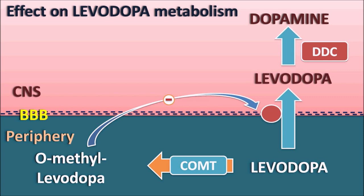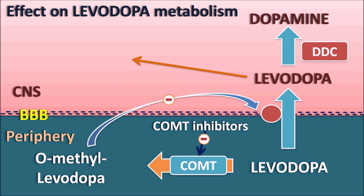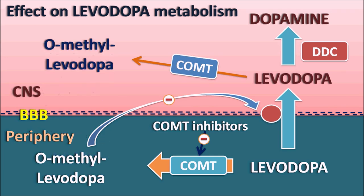Here, COMT inhibitors play an important role. COMT inhibitors inhibit the peripheral metabolism of levodopa so that it is not converted into O-methyl levodopa, which would interfere with its absorption into the CNS. In this way, COMT inhibitors increase the entry of levodopa into the CNS, where it can be converted into dopamine, thereby increasing dopamine levels. Interestingly, COMT inhibitors can also act at the CNS level. Tolcapone can inhibit the COMT enzyme present within the CNS, whereas entacapone cannot cross the blood-brain barrier. However, action at the central level is not the main mechanism; action at the peripheral level is the main mechanism of COMT inhibitors.